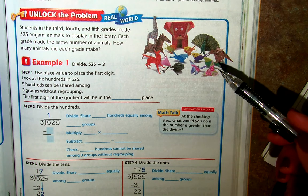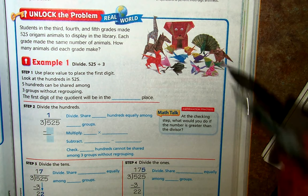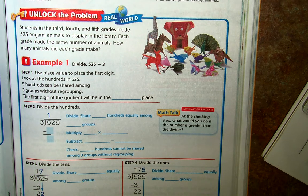These are origami animals. These are art made with paper. Each grade made the same number of animals. How many animals did each grade make?